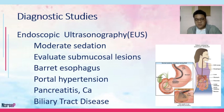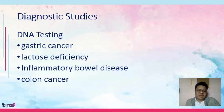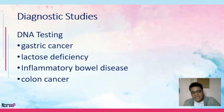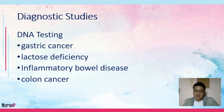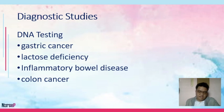EUS can also be used to evaluate pancreatitis, pancreatic cancer, and biliary tract disease, since the bile duct can be reached through the endoscope and the pancreas — located behind the stomach — can be visualized clearly. DNA testing is recommended for diseases with strong familial predisposition such as gastric cancer, lactose intolerance, inflammatory bowel disease (ulcerative colitis and regional enteritis), and colon cancer.